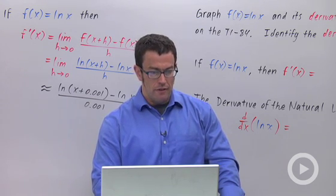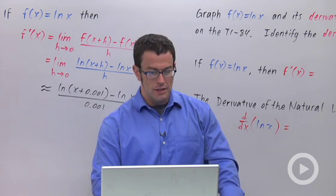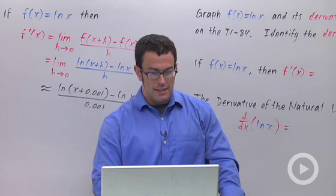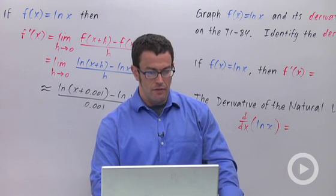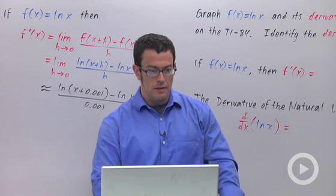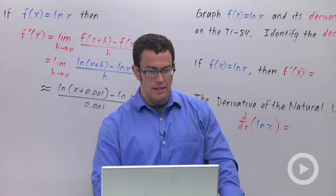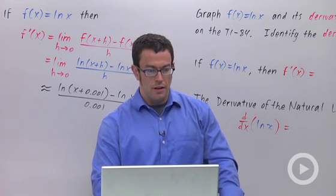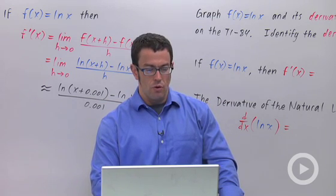natural log of x plus 0.001 minus natural log of x. Close parenthesis. And then divide that by 0.001. So this is a difference quotient with h equal 0.001. It'll be pretty close to the limit as h approaches 0 of the difference quotient. Let's see what the graph gives us.